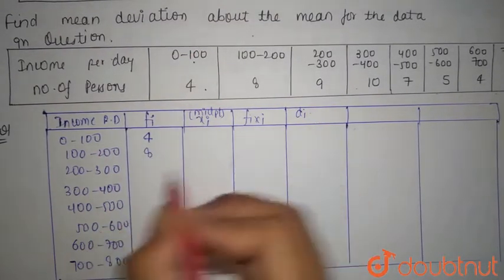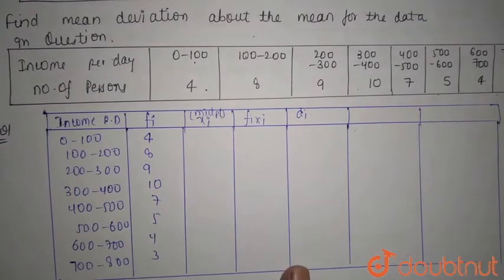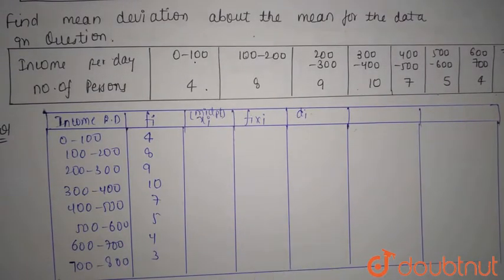The number of persons fi is 4, 8, 9, 10, 7, 5, 4, 3. This is given in the question. Now we are going to take the midpoint from each class.